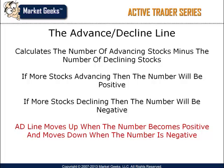The advance decline line, also known as the AD line, is a market breadth indicator that's based on the net advancing stocks. This is the number of advancing stocks less the number of declining stocks. The net advances is a positive number when there are more stocks advancing than declining, and negative when there is a large number of declining stocks compared to advancing stocks. The AD line rises when the net advances becomes positive and falls when net advances becomes negative.